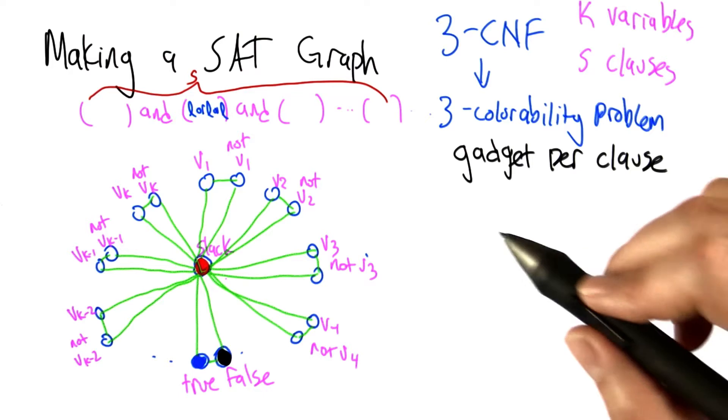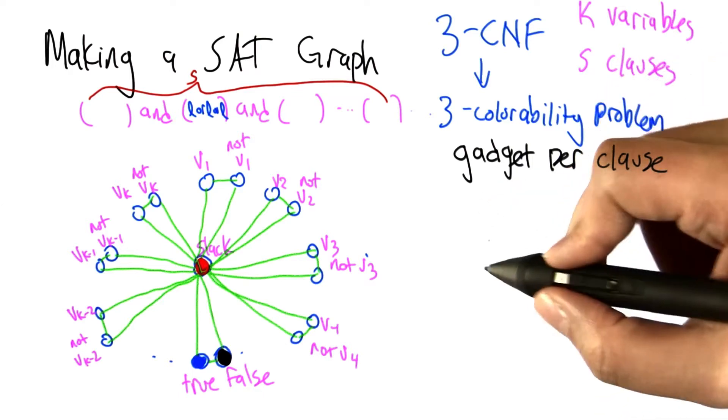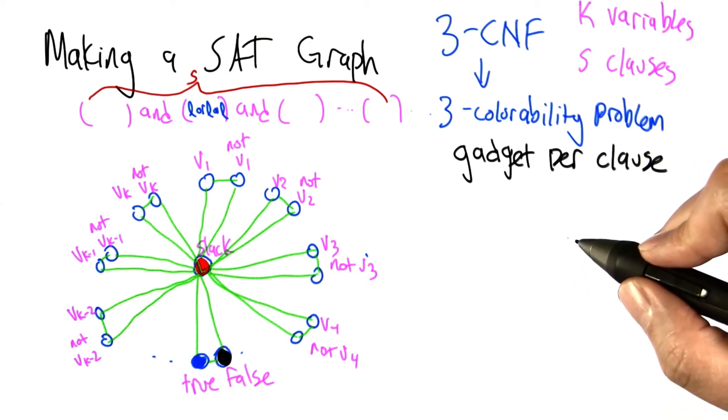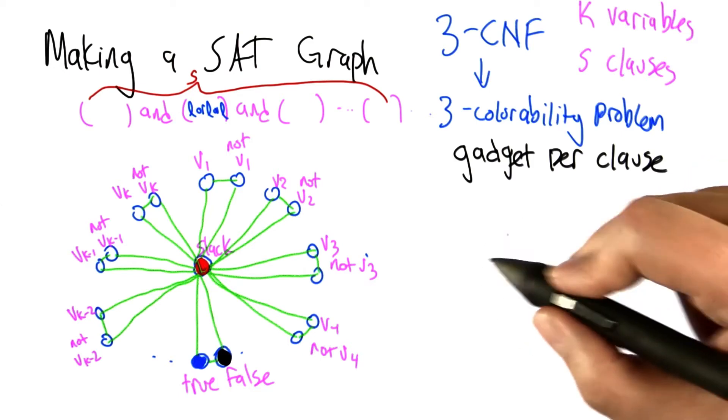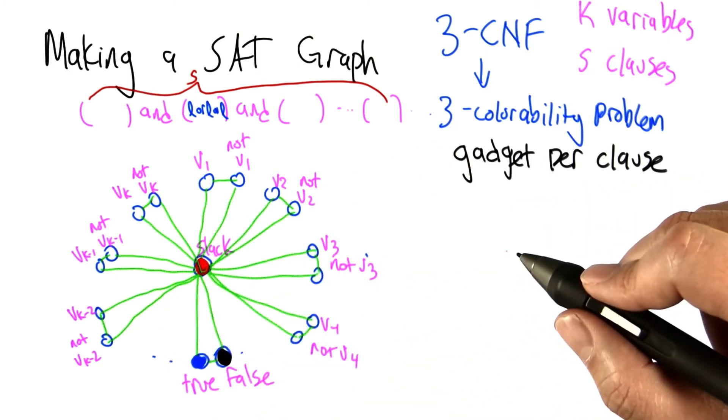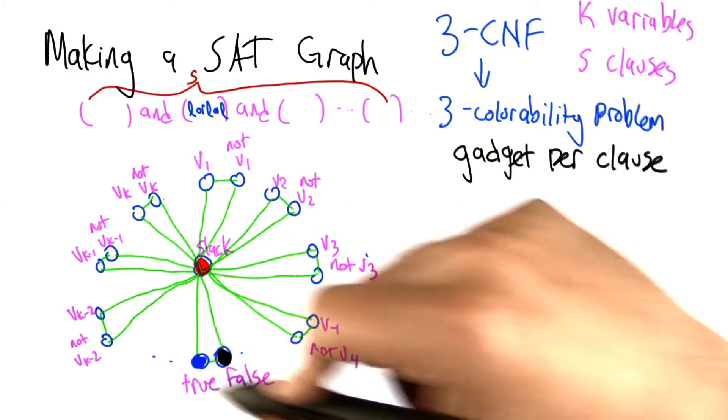Now we're going to extend this graph by adding a gadget for each clause. A gadget is just going to be a little chunk of a graph, but it's going to have a very particular property to it, that it's going to be 3 colorable in the context of the rest of the graph if and only if the corresponding clause is satisfiable in the context of the assignment.